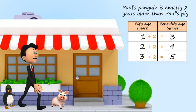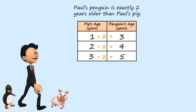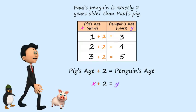Now, we want to write that in a cool equation. We say that the pig's age plus two equals the penguin's age. But that doesn't look super mathy, so we'll call the pig's age X and the penguin's age Y. Now we can write X plus two equals Y. Fun fact, this one is called an additive relationship.